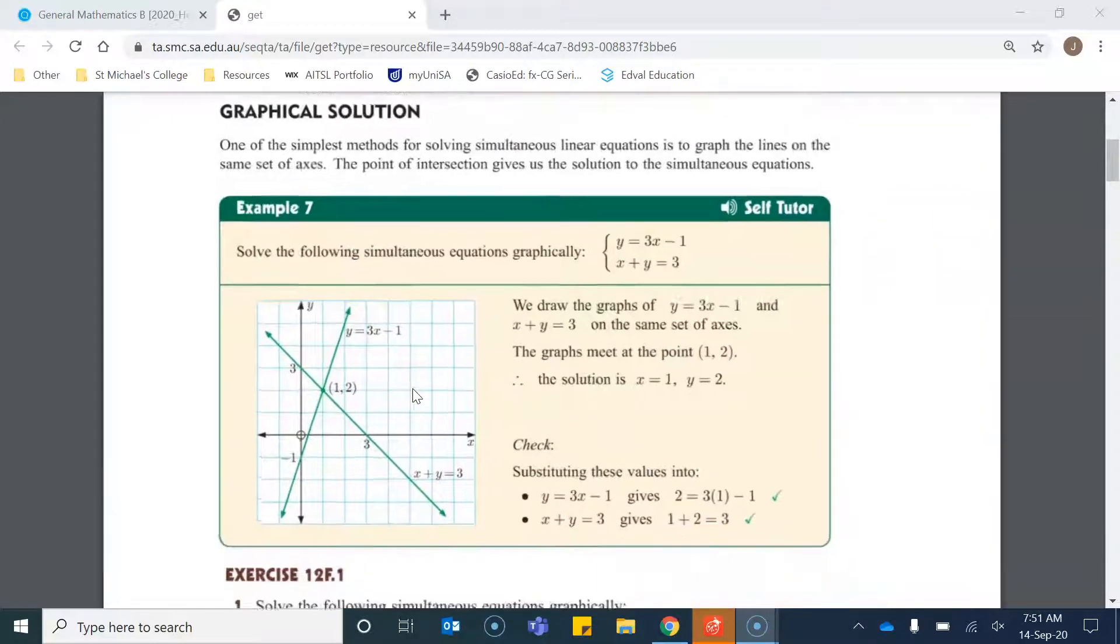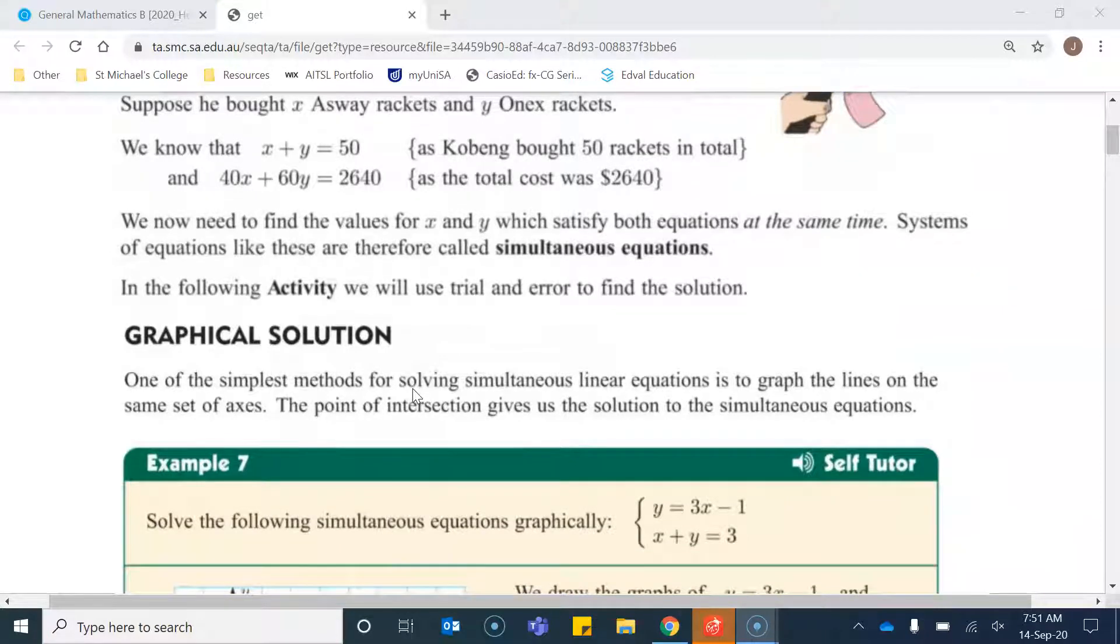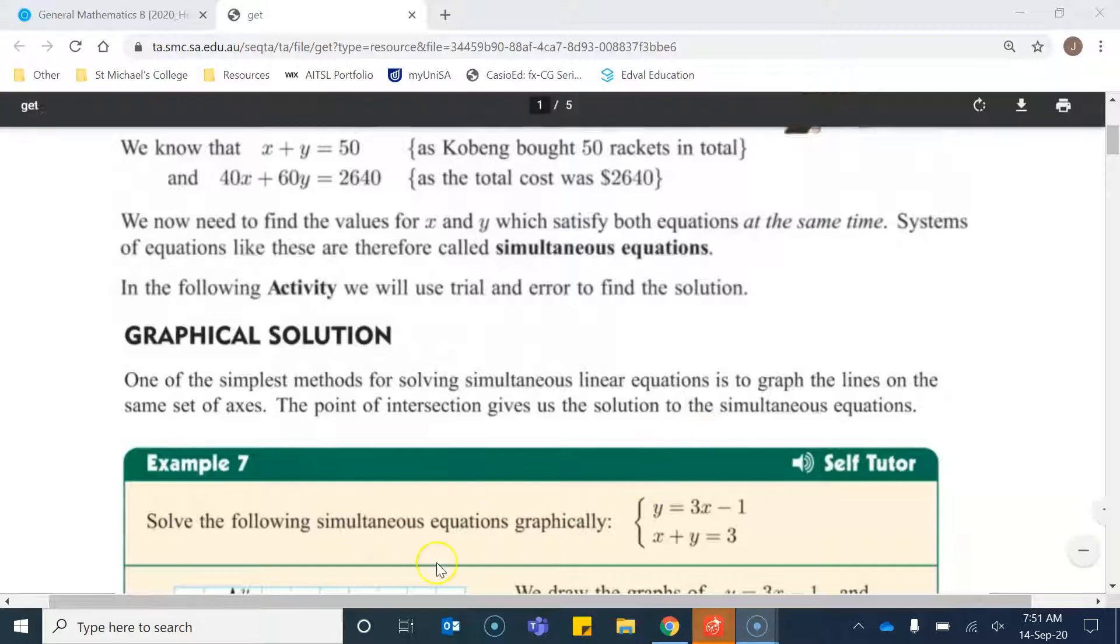Let's have a look at this example here. The first thing that we need to be comfortable in doing is graphing these types of equations, which is what we practiced all last week. This first equation is in gradient intercept form. I'll start with my y-intercept of negative one, and then I can use the slope, the y-step over the x-step to plot out the graph.